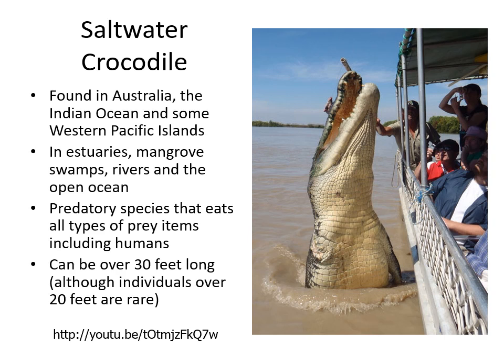The saltwater crocodile is found in Australia and parts of the Indian Ocean and Western Pacific Islands. It is not fully marine — it goes into estuaries, mangrove swamps, rivers, and open ocean. It is a predatory species that will eat all types of prey, including humans, so in areas with saltwater crocodiles you do not want to swim. They are large at about 20 feet; some can reach 30 feet, though that is very rare. There is a local tour group shown here feeding them, which is not ecologically a good idea, as it makes them associate humans with food.